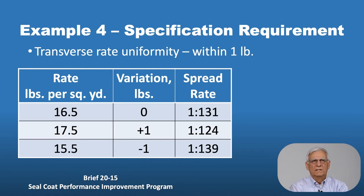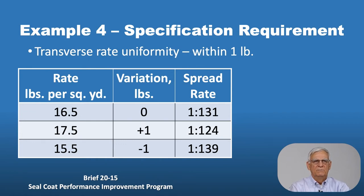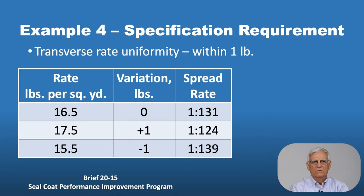As you recall, the specification says transverse rate uniformity must be within one pound per square yard — as we move across the pavement, the aggregate placed per square yard must be within one pound of the adjacent square yard. So at 16.5 pounds per square yard we get a rate of 1 to 131. At 17.5 pounds per square yard the next square yard of surface comes out to 1 to 124, and one pound less gives 1 to 139. This shows the sensitivity: you can vary from 1 to 124 to 1 to 139 and still be within specification.